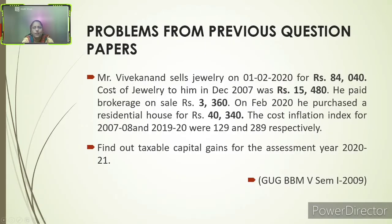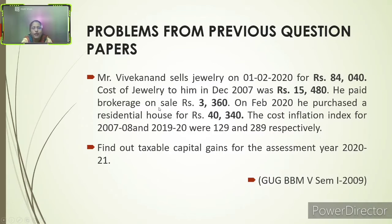Now let us look at problems from previous question papers asked in prior examinations. Problem 1, from GOZ BBM 5th Semester 2009: Mr. Bebekana sells jewelry on 1-1-2020 for rupees 84,040. Cost of jewelry to him in December 2007 was rupees 15,480. He paid brokerage on sale of rupees 3,360. On February 2020 he purchased a residential house for rupees 40,340.